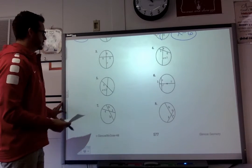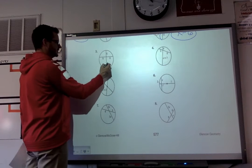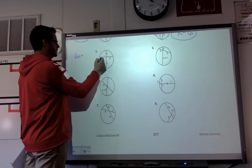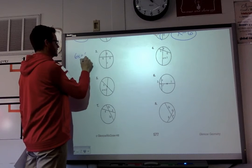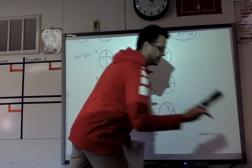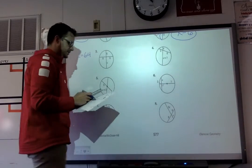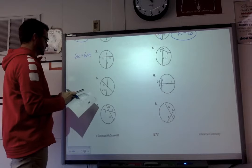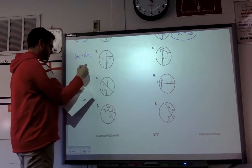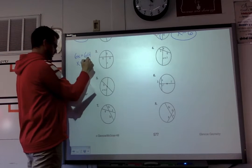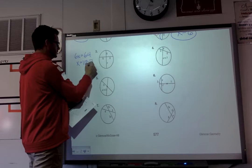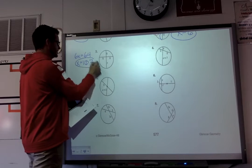Number three: 6 times X, so 6X equals 8 times 8, which is 64. They want the answer to the nearest tenth, so 64 divided by 6 gives a solution of 10.7.